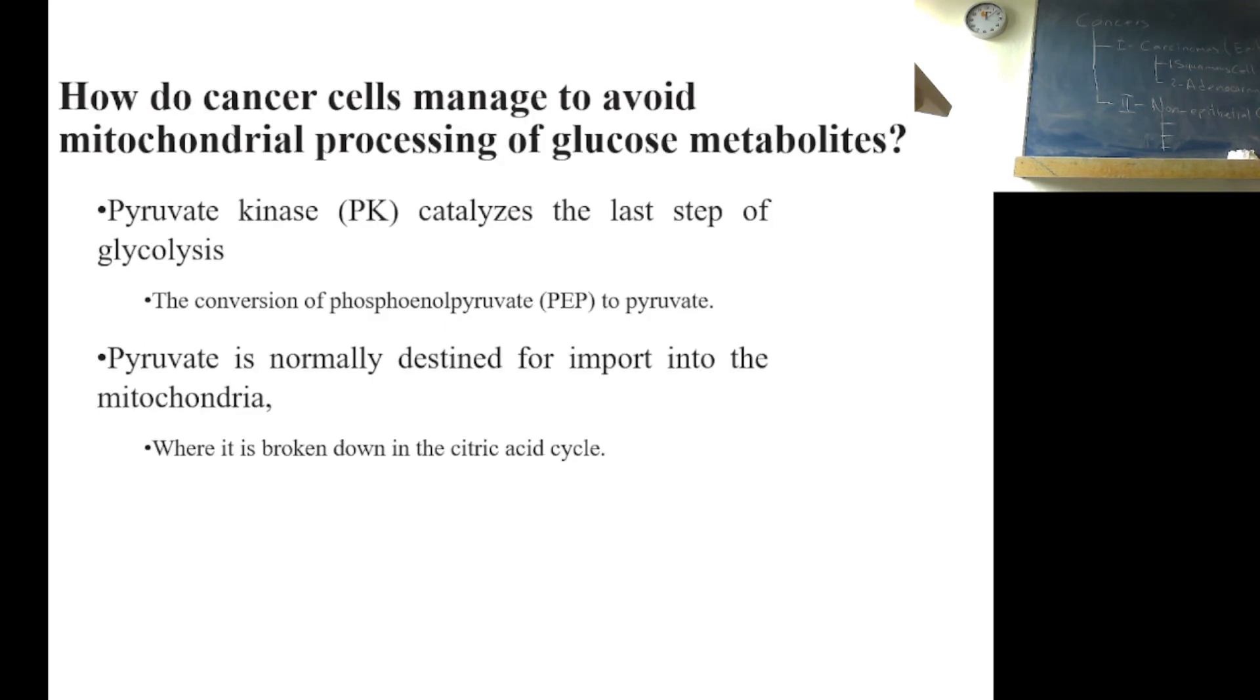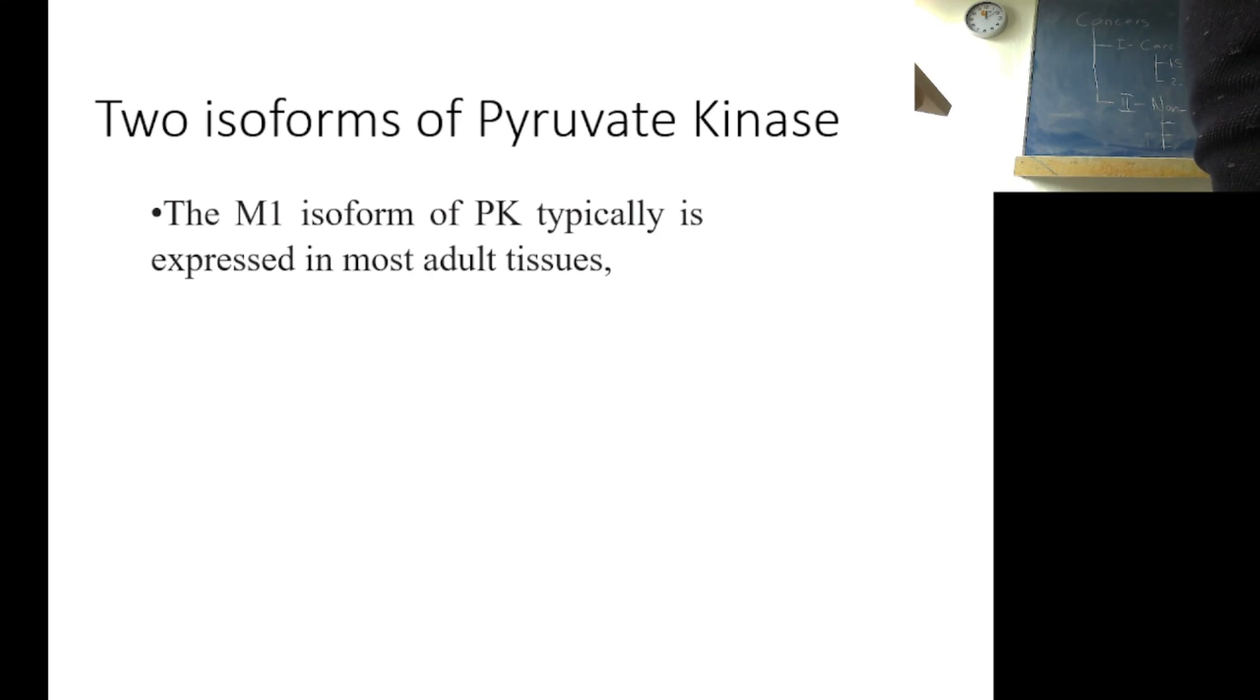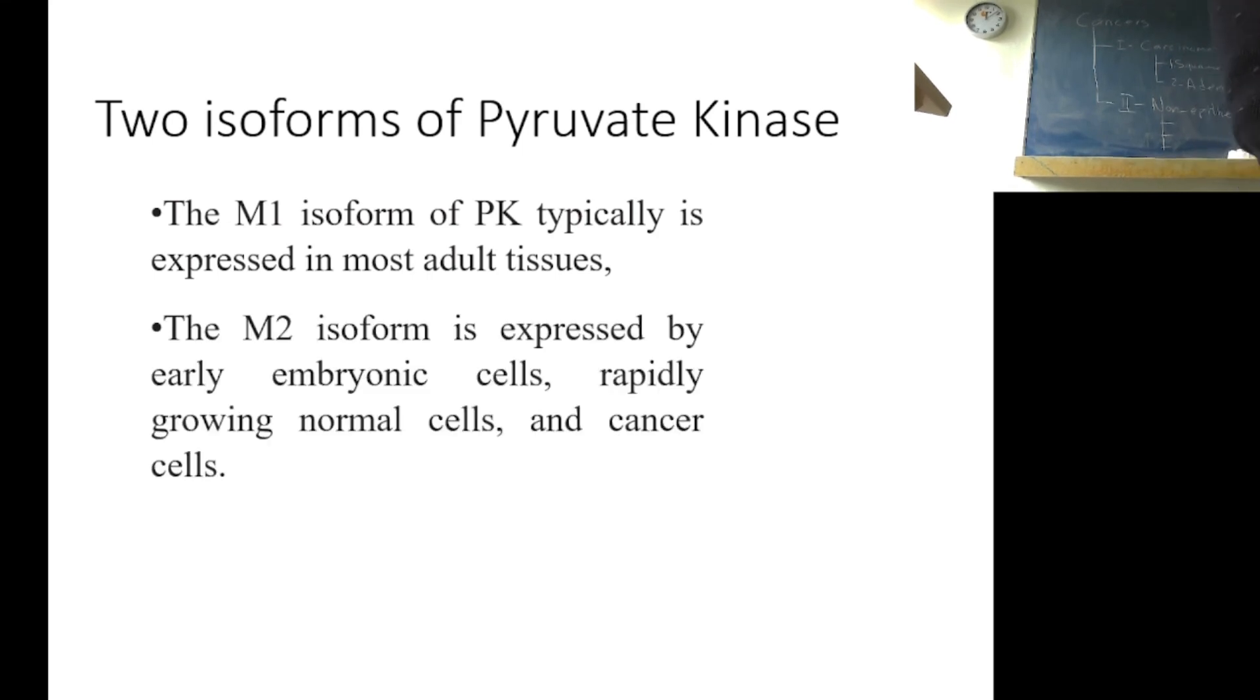How do cancer cells manage to avoid mitochondrial processing of glucose metabolites? Pyruvate kinase, this is an enzyme as you know, catalyzes the last step of glycolysis, conversion of phosphoenolpyruvate to pyruvate. Pyruvate is normally designated for import into mitochondria, where it's broken down into citric acid. There are two isoforms of pyruvate kinase: M1 isoform and M2 isoform. M1 isoform of PK typically is expressed in most adult tissues. But there is a second isoform, which is M2, that is expressed by early embryonic cells, rapidly growing normal cells and cancers.